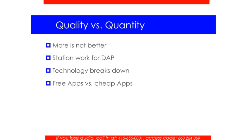Station work for developmentally appropriate practices: quite a few times teachers don't have the money to purchase technology for every student. A simple app on an iPad, or an active gaming piece of equipment such as Dance Dance Revolution or Nintendo Wii, may only have a few students active at once, so they'll use it as a station within a lesson that's accomplishing the same learning objective. That's a very effective option.